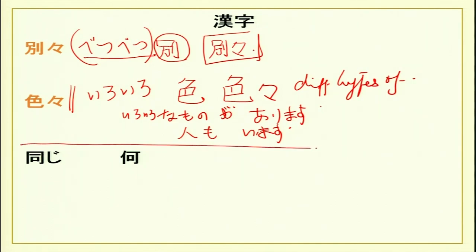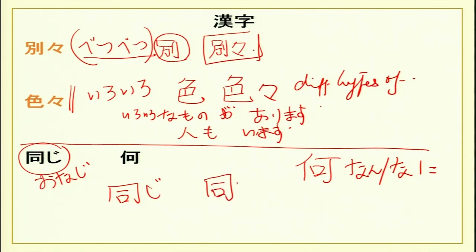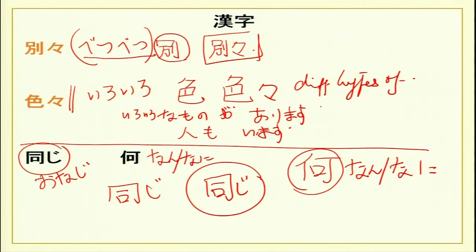Similar looking kanji: there is one kanji today — nan or nani which you have done, and this character is onaji — same. Onaji is very similar to nani, please do not confuse them. I will do more similar looking kanjis with you so that you can remember them as words, since you already know the words it is easy to learn the kanji.